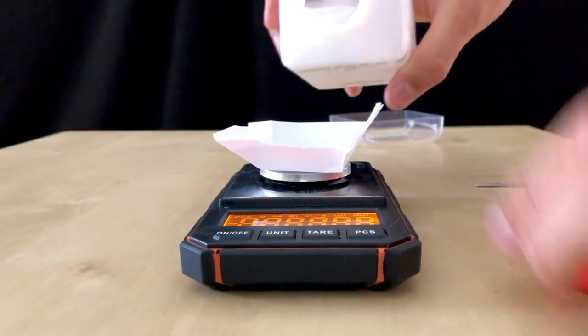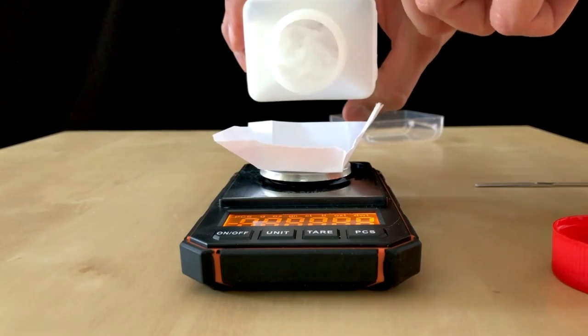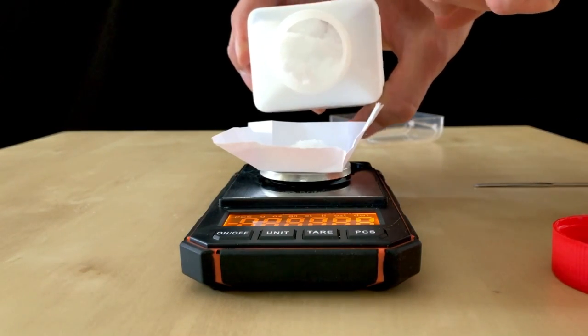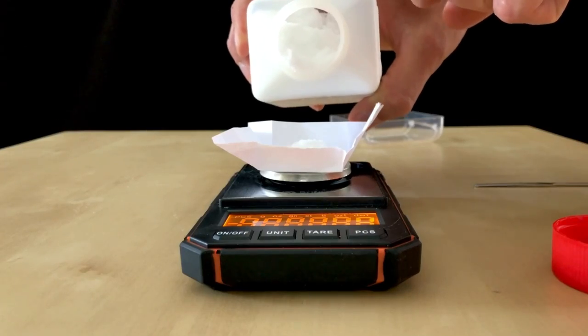In order to avoid contamination of the potassium iodide, I didn't weigh it out using a spatula but I transferred it onto the paper directly. We used 4 grams of potassium iodide.